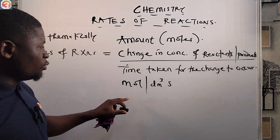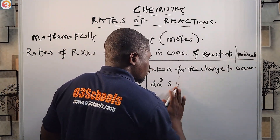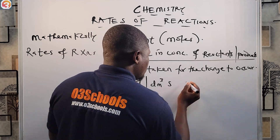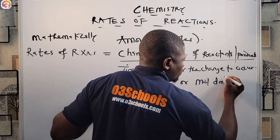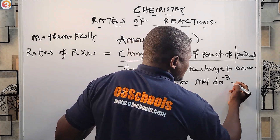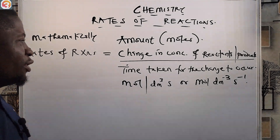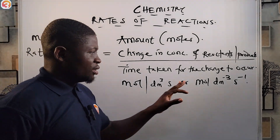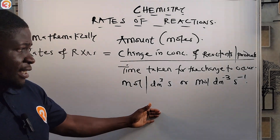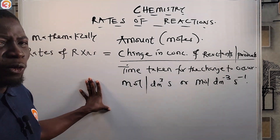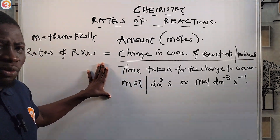The unit of rate of reaction is moles per dm³ per second — that is, mol dm⁻³ s⁻¹. So mole per decimetre cubed per second is the unit for rate of reaction. Please take this into your mind.